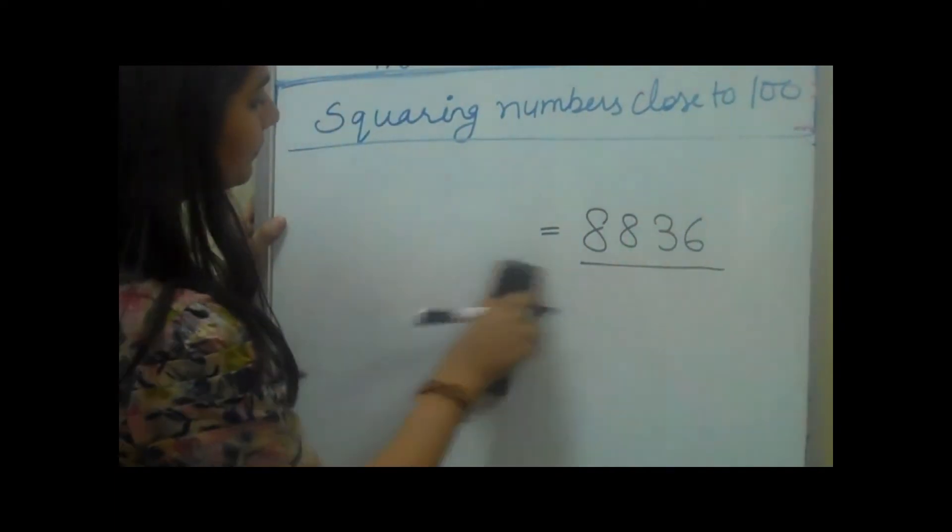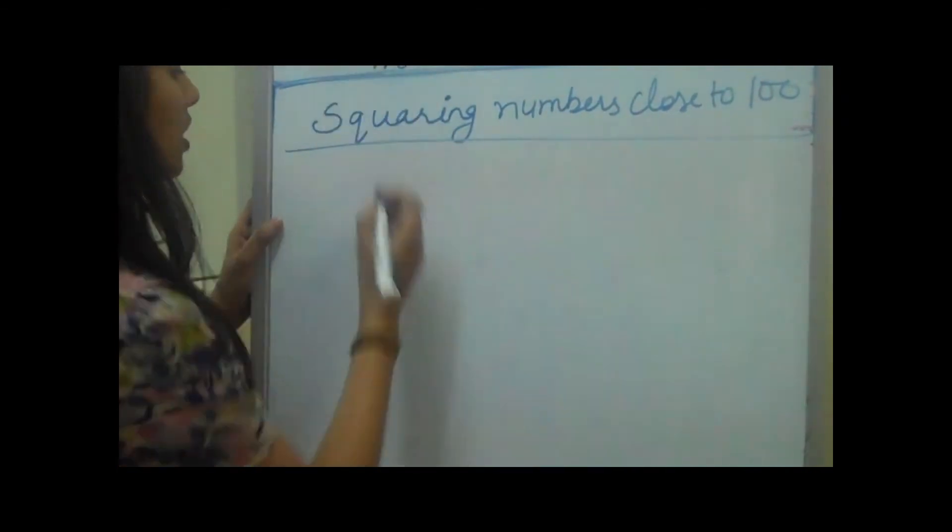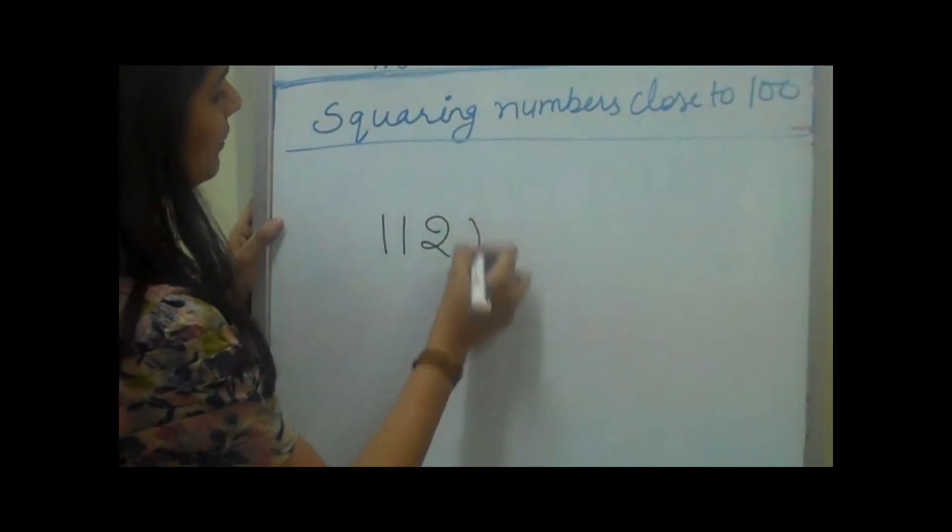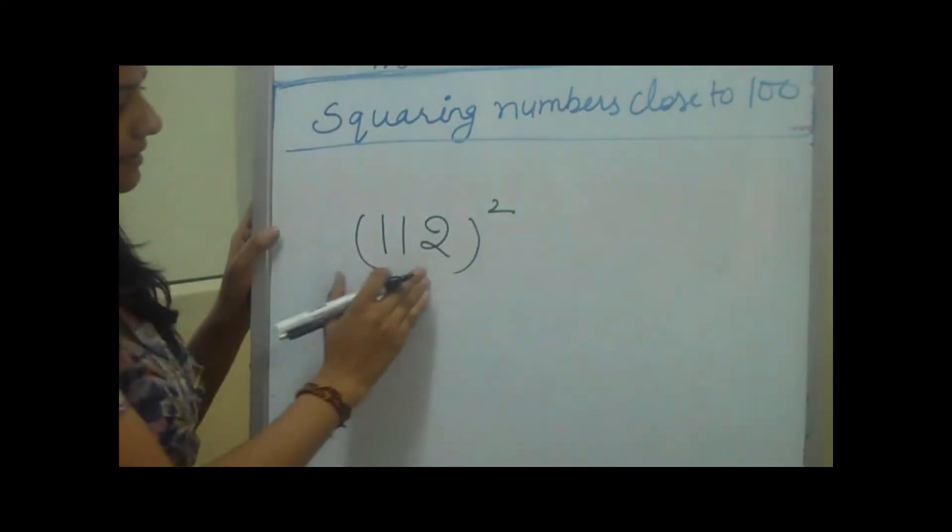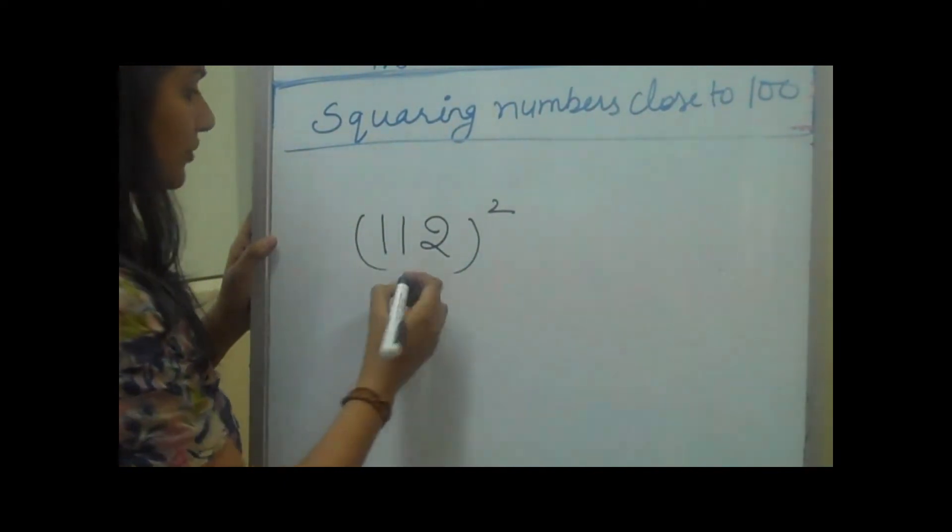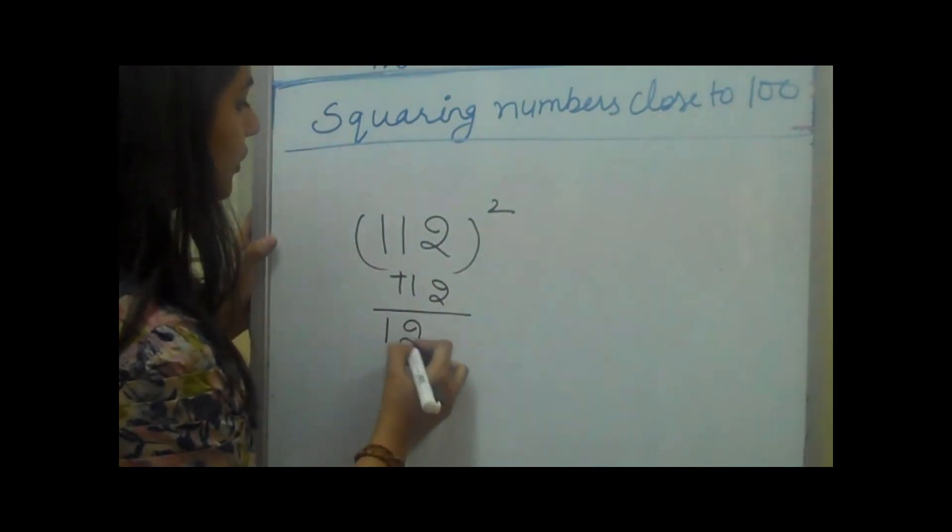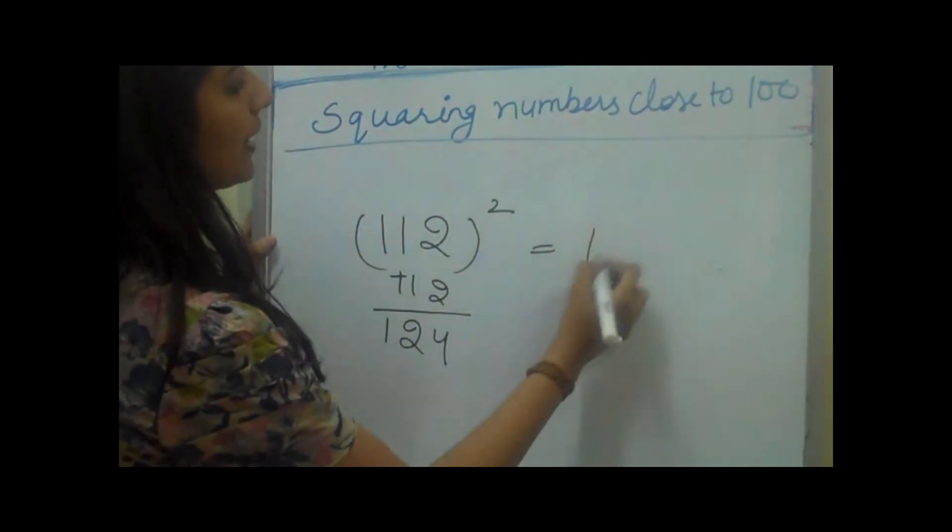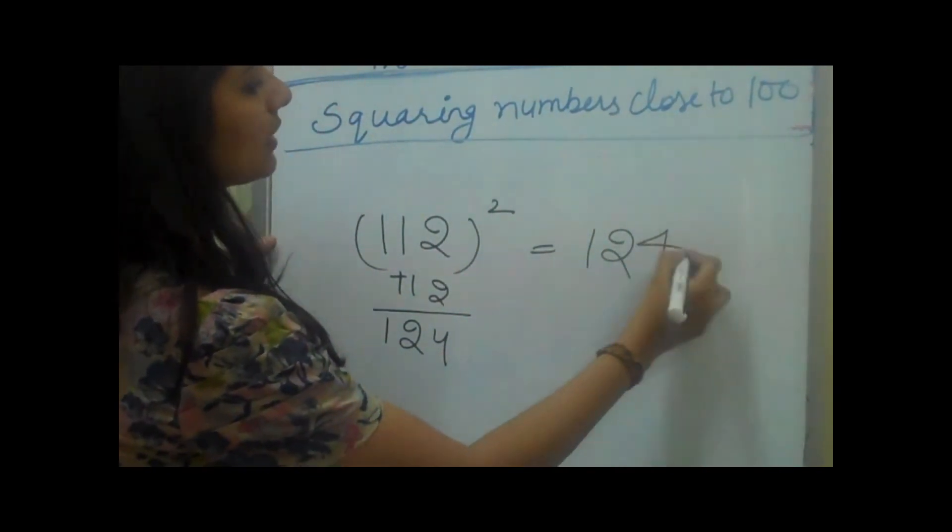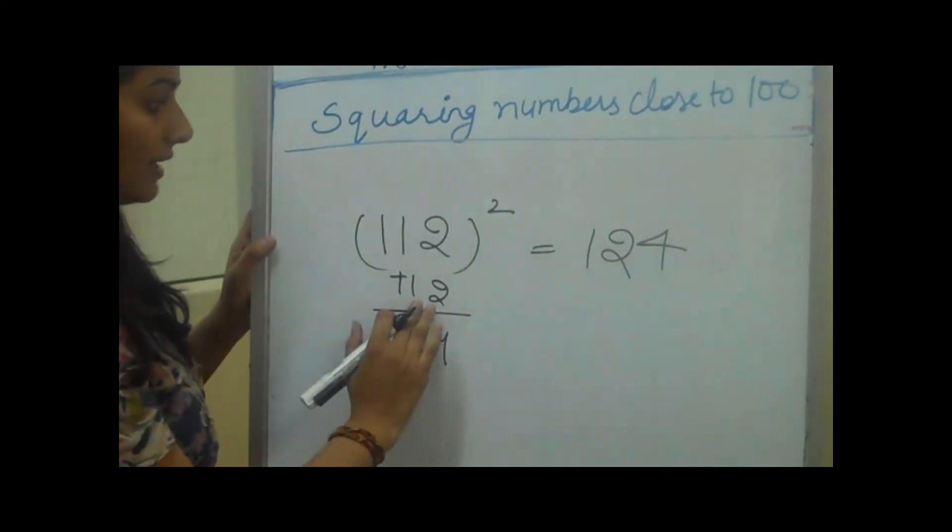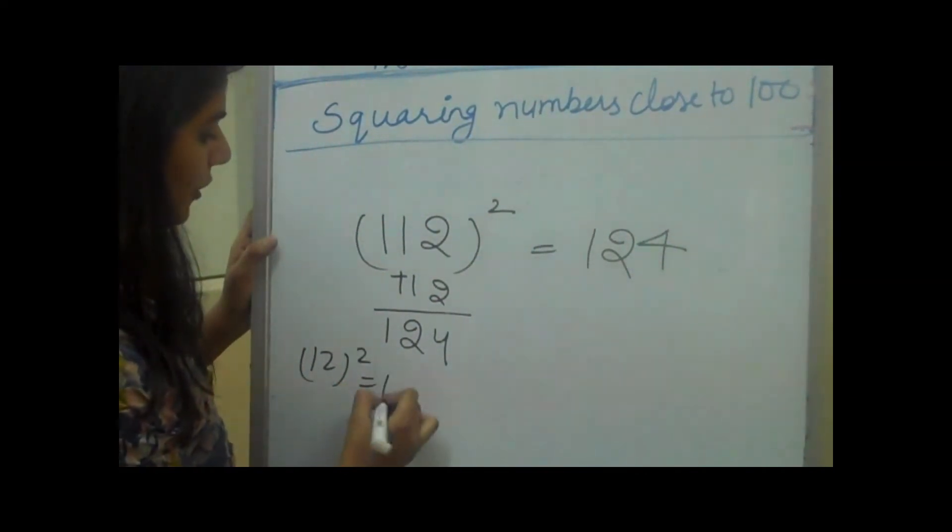Let's take another example. 112, and we want to square it. We can see it is 12 more than 100. So we will add 12 here, which makes 124. We will write here. And then with 12, 12 square is 144.